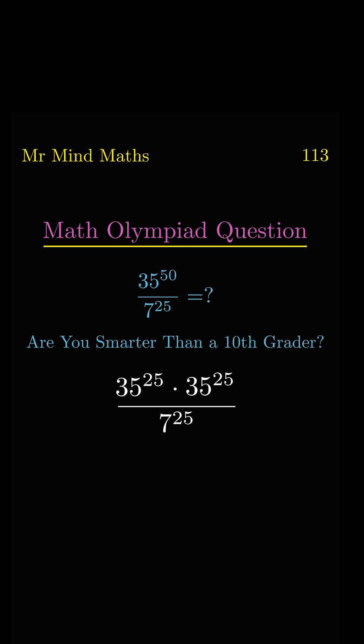We know that when the numerator and denominator have the same power, we can write it as one power. Now 35 and 7 will cancel, giving us 5 to the power of 25.